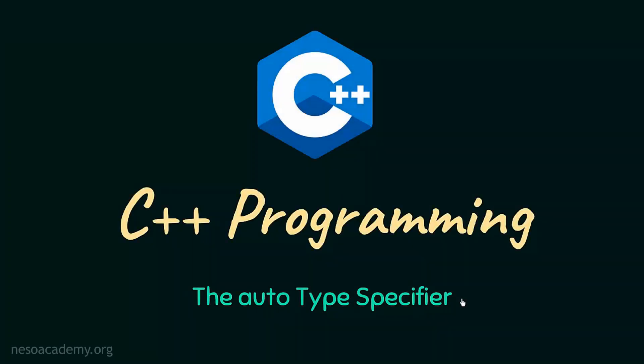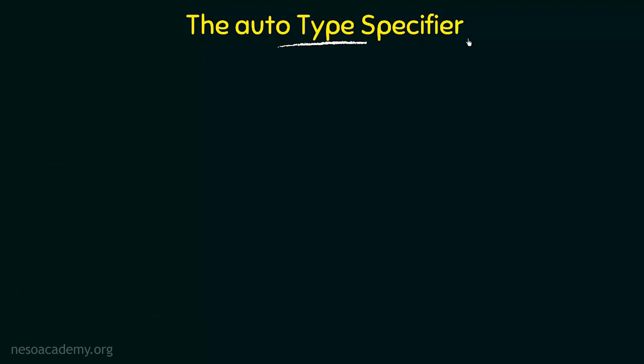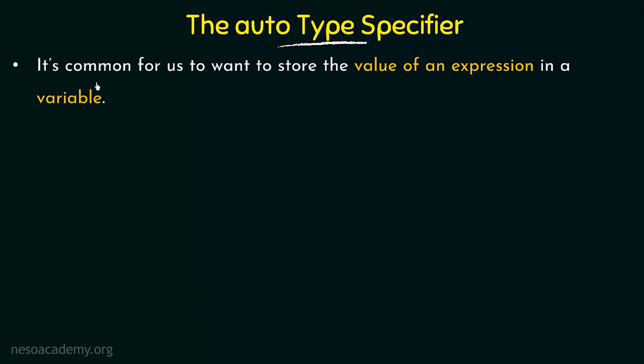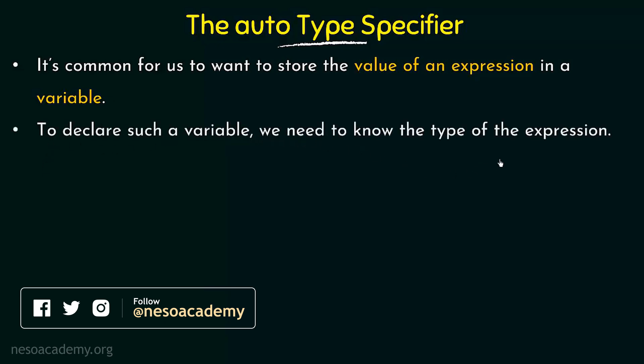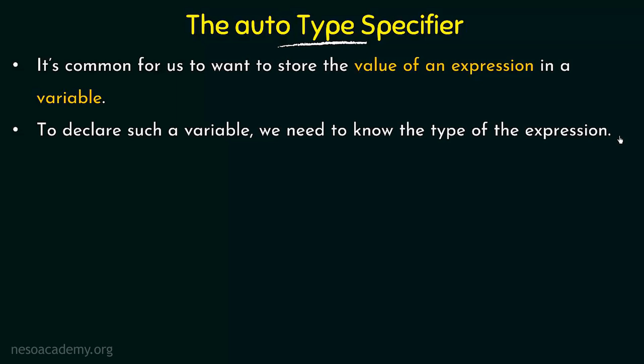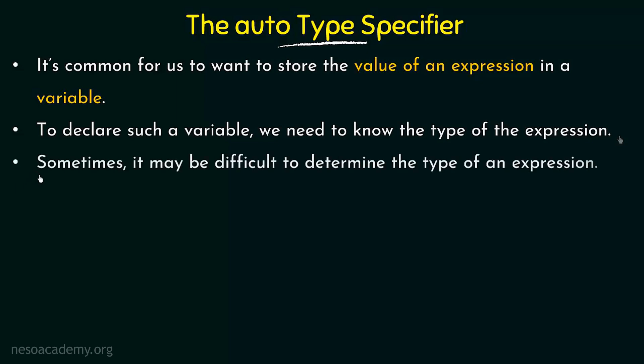In this video we will discuss the auto type specifier. It is common for us to want to store the value of an expression in a variable. To declare such a variable we need to know the type of the expression, so that we can declare the result variable to be of the same type. Sometimes it may be difficult to determine the type of an expression, and hence it will be difficult to declare a result variable to store the value of that expression.